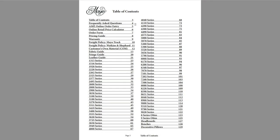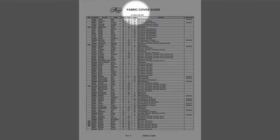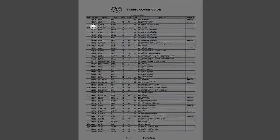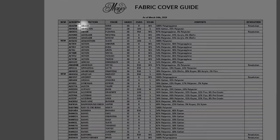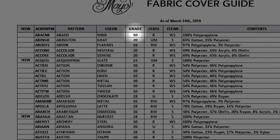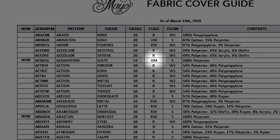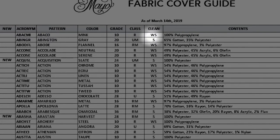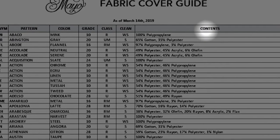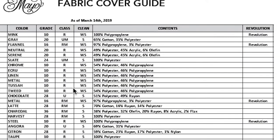On page three starts the table of contents. If you're looking for a specific style, this is obviously where you need to go. So a little bit about the cover guide — you can see if you're looking for a Baco mink and you want to know what the grade is, the grade is going to be in the fourth column here. For some styles that don't use up-the-roll fabrics, this is where you can find out if it's up the roll or railroaded. And then of course you have a cleanability code, the contents, and if it's Revolution or not.